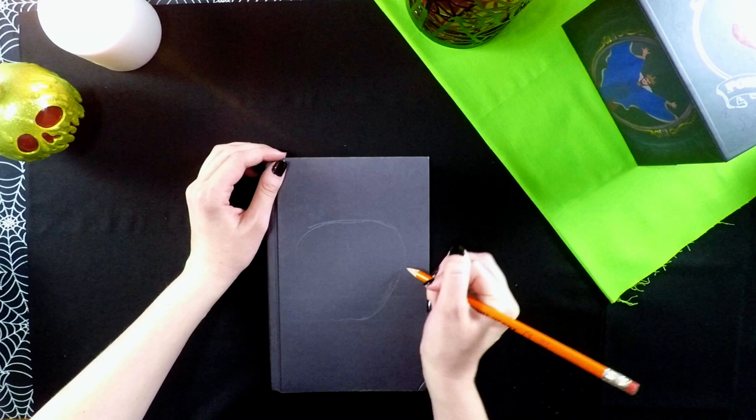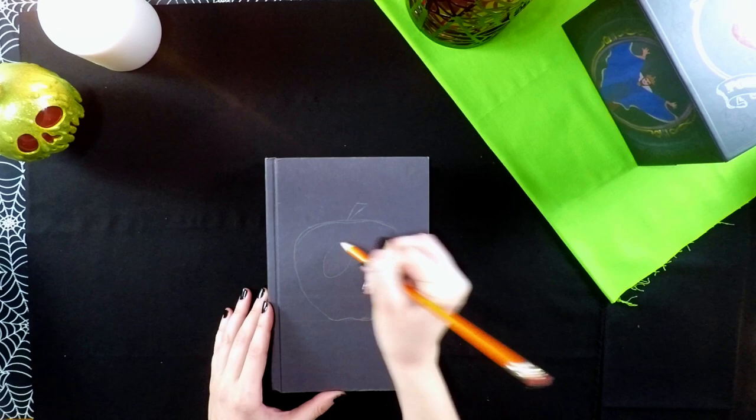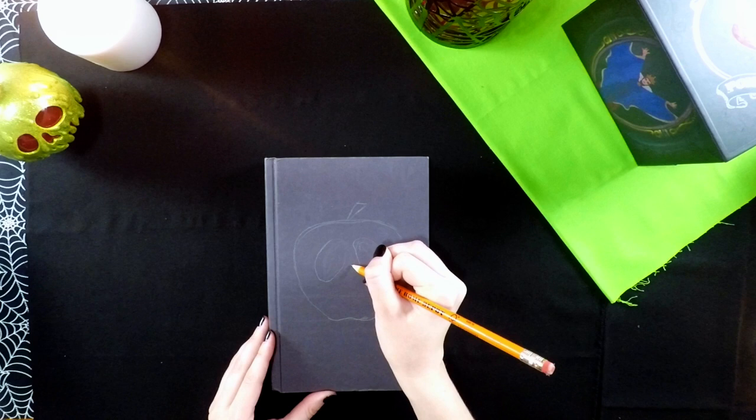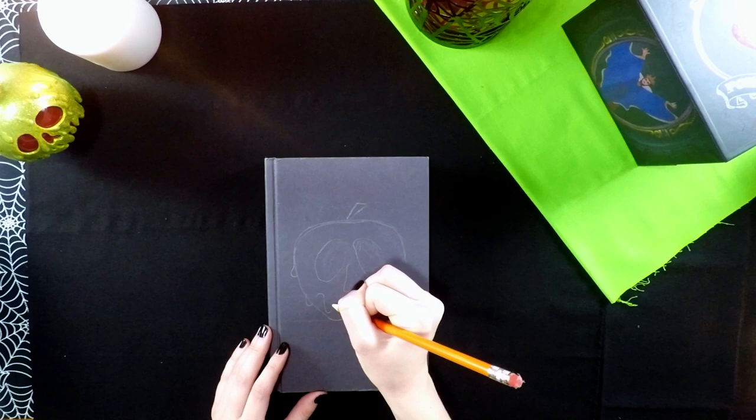For the first book I'm using the design of the poison apple that the queen gives to Snow White. So I drew some lines at the bottom just so I could see where I wanted the apple to end, and then I'm just using a reference picture and drawing in pencil the apple onto the book.